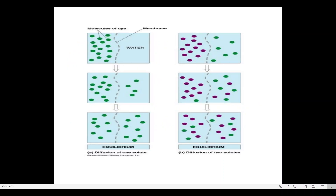This diagram is for your understanding. These are molecules in a membrane solvent. Through this membrane, the molecules escape and slowly diffuse, spreading uniformly. This process continues until equilibrium is achieved. In the case of diffusion of two solutes, two different colored solutes get mixed up with each other until an equilibrium is attained.